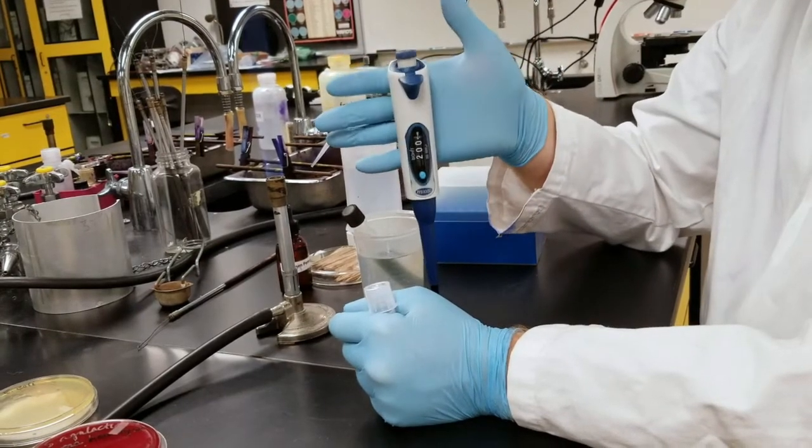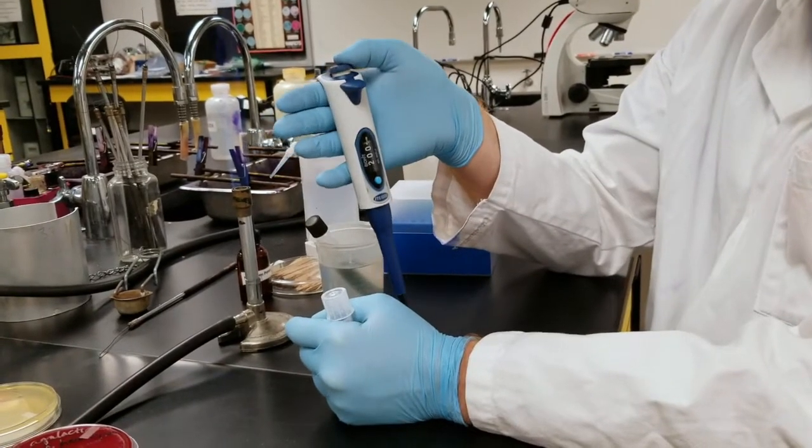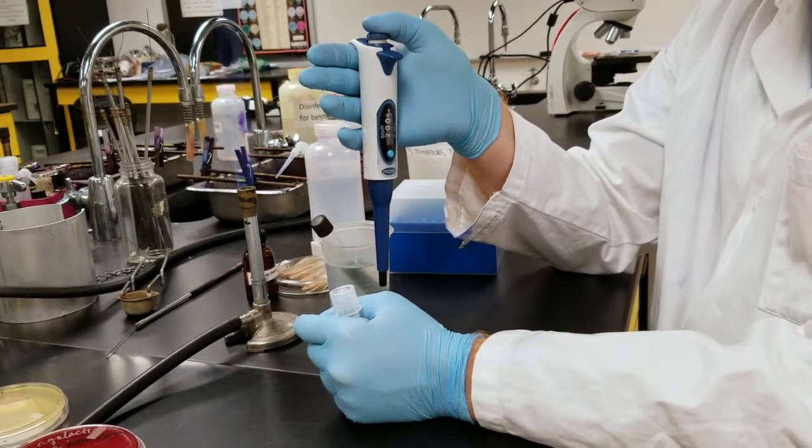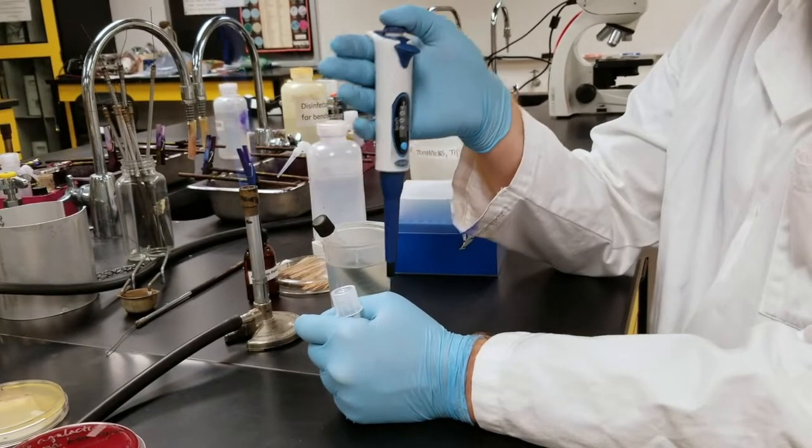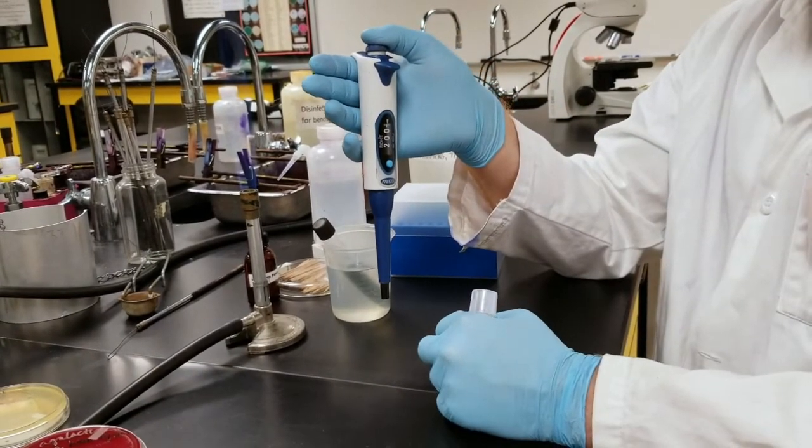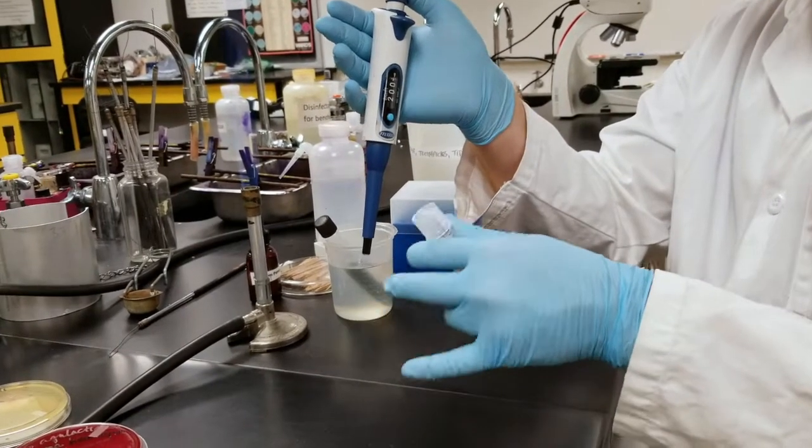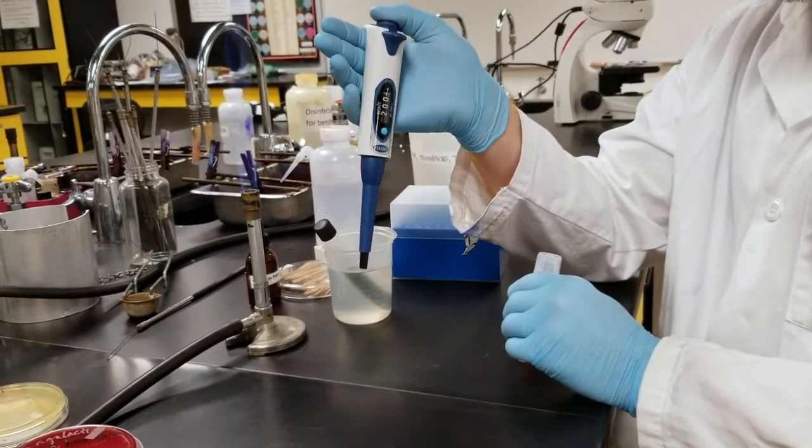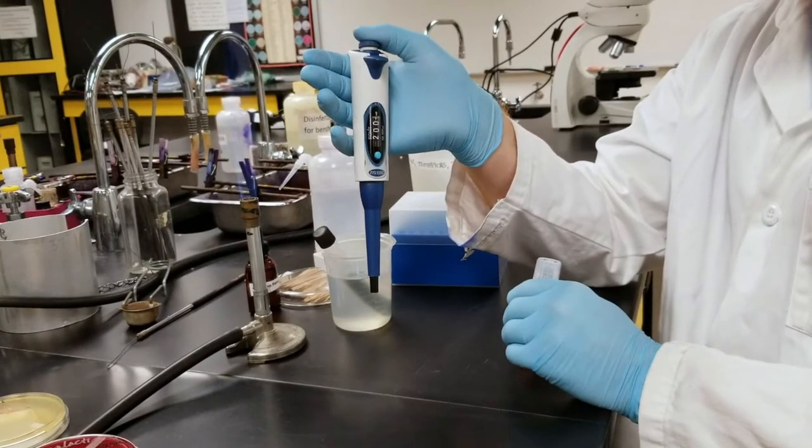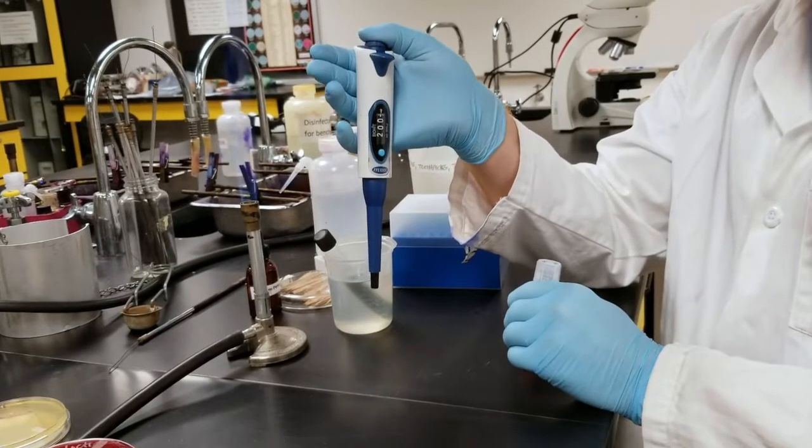When using a pipette, it's very important that when you go down, push down on the top knob to push out air and you have a first stop of resistance. That is where you are set to withdraw to 200. I would withdraw into my tip and then when I'm transferring the contents of my tip, I would push down even more. This second stop here evacuates all the solution in your tip.